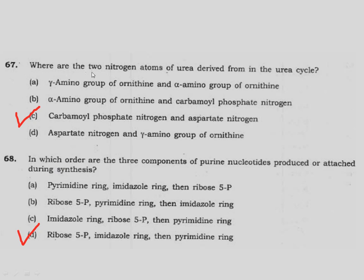Question 67: Where are the 2 nitrogen atoms of urea derived from in the urea cycle? In the urea cycle, the components attach in order: first ribose-5-phosphate, then the imidazole ring forms, then it converts into the pyrimidine ring. Correct answer is option D.